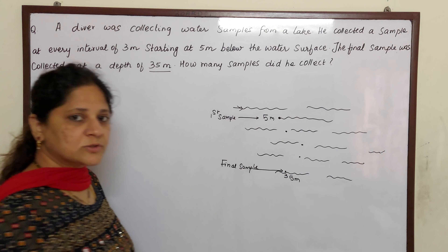But these 10 samples exclude the sample collected at 5 meters, because we subtracted 35 minus 5, so 5 meters is not included in the distance. But his first sample was collected there, so we have to include that also. So plus 1 sample at 5 meters — totally he collected 11 samples. This is your final answer.